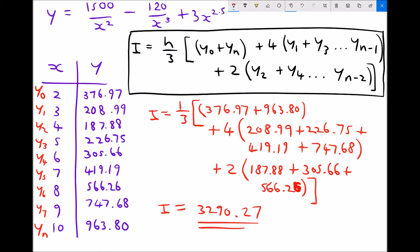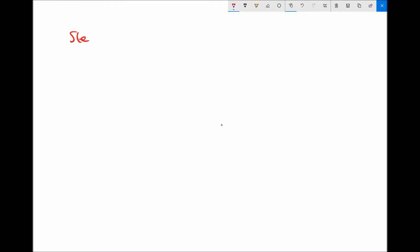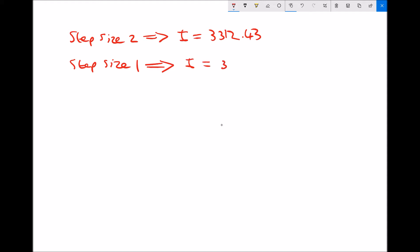With a step size of 2 we got 3312.43, and with a step size of 1 we got 3290.27. They're not massively different, but there is a difference. We're going to find the exact integral of the original function between the limits of 2 and 10 to compare.